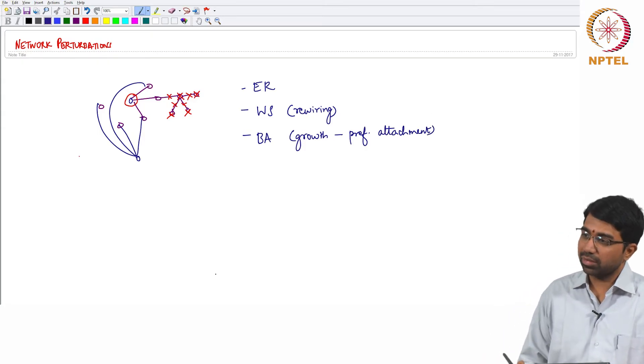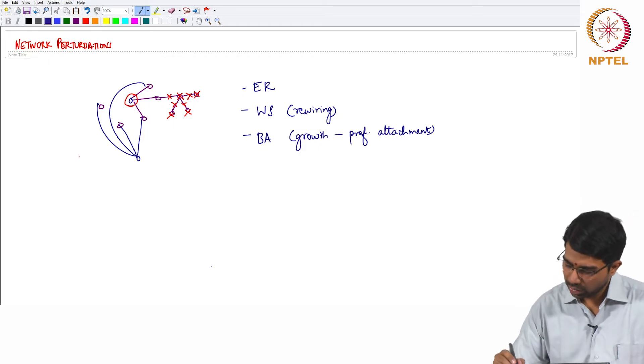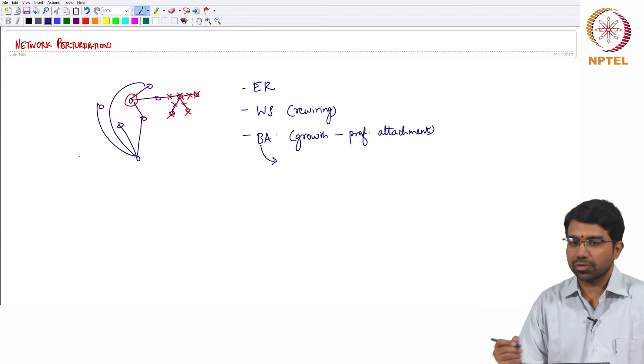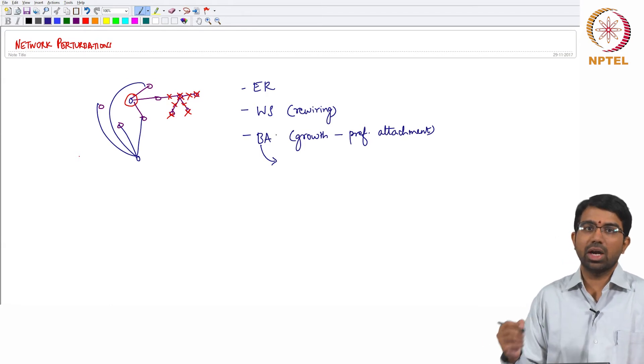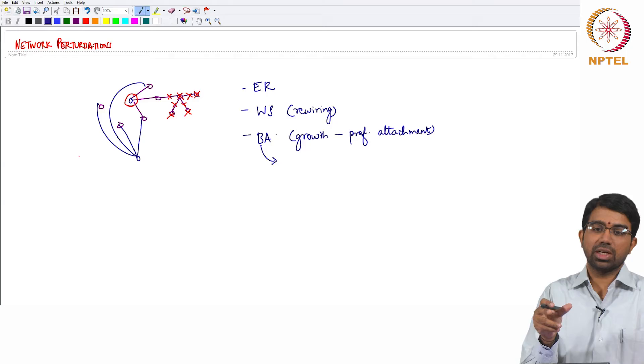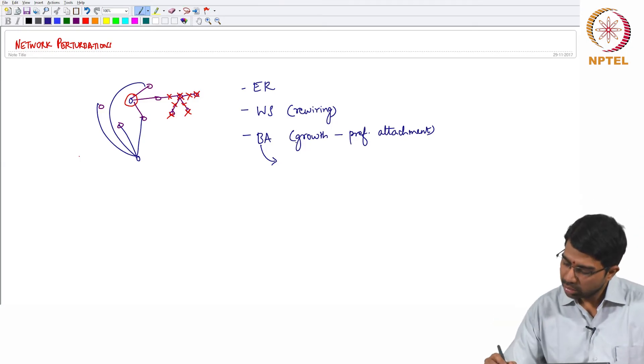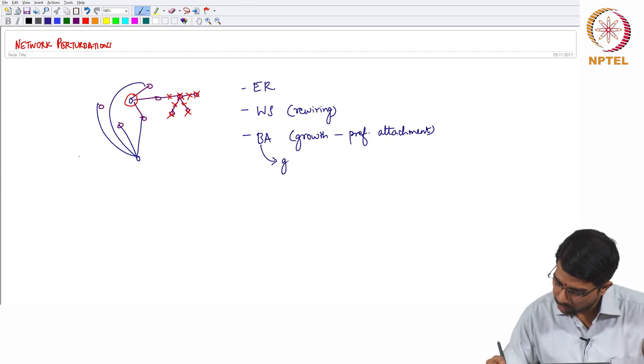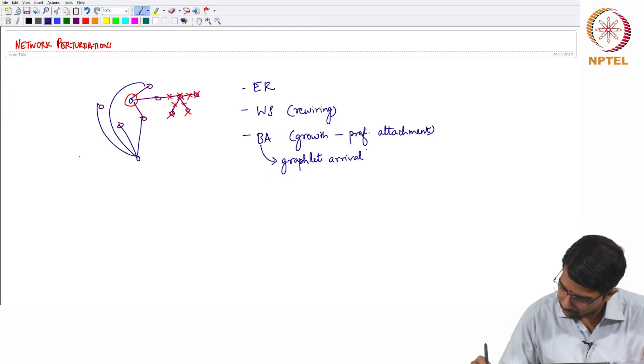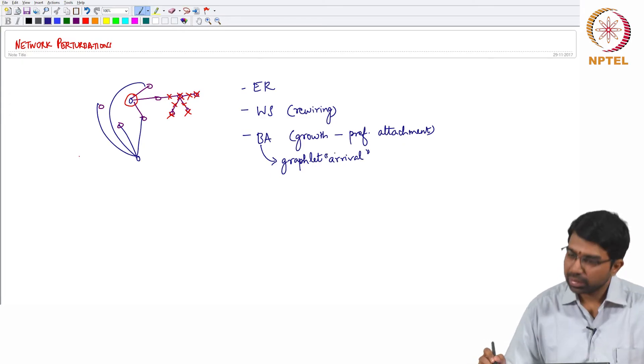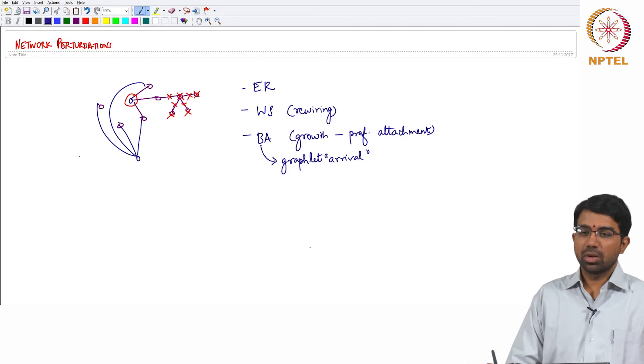There are other models that we have not studied. Even in Barabasi, the classic example that we looked at was what happens when you add one node at a time. You start with an initial network and keep adding one node at a time. But you may have what is known as a graphlet arrival. What is a graphlet? It's a subgraph.